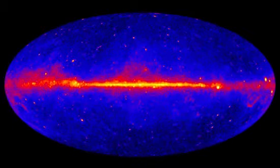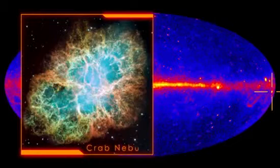Here's what the sky looks like in high-energy gamma rays. The pulsar in the Crab Nebula is among the brightest sources.